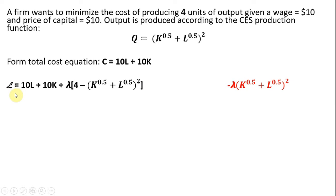We'll set up our Lagrangian. So our Lagrangian equals 10L plus 10K. That is the cost equation that we're trying to minimize, subject to the production constraint. What's the production constraint here? We want to produce four units of output according to the CES production function. So this four represents the amount of output we want to produce. And we're just going to move this right-hand side over to the left-hand side to form our production constraint.